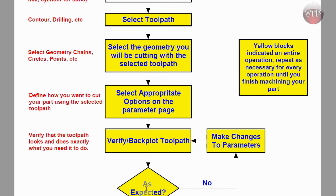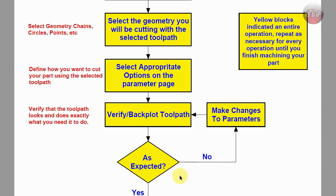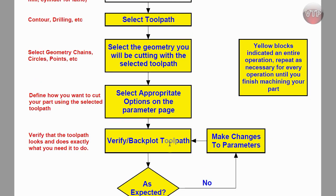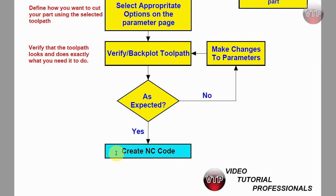If the verification looks good, proceed. If not, go back to the parameters, make changes, and keep iterating until everything is correct. The yellow blocks in the flowchart indicate an entire operation — repeat as necessary for every operation until you've finished machining your part.